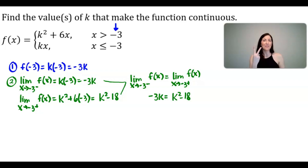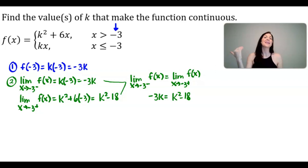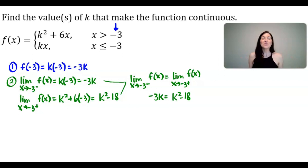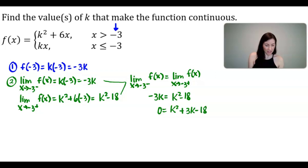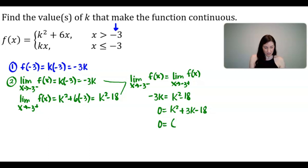I'm guessing we'll have two values of K. As a calculus teacher, the algebra is always most challenging for students in a problem like this. We first add 3K to both sides to write this quadratic in standard form, giving us 0 equals K squared plus 3K minus 18.